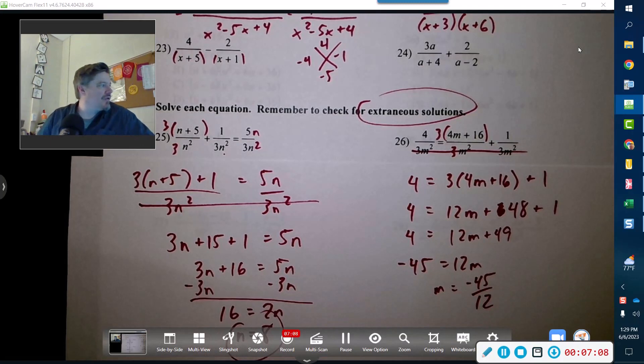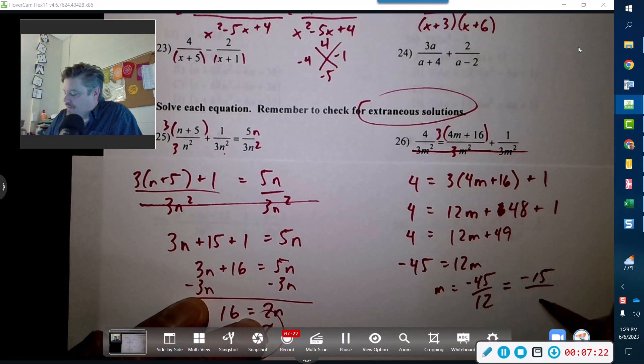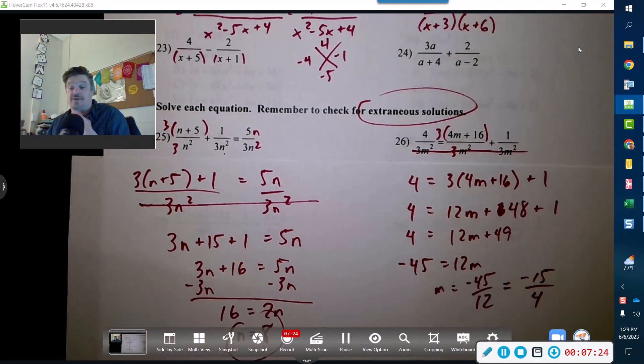I want to make sure because usually when I get fractions like that I can kind of suspicious. And looks like 3 will go into both of those, so that would be negative 15 over 4. And that is correct, actually.